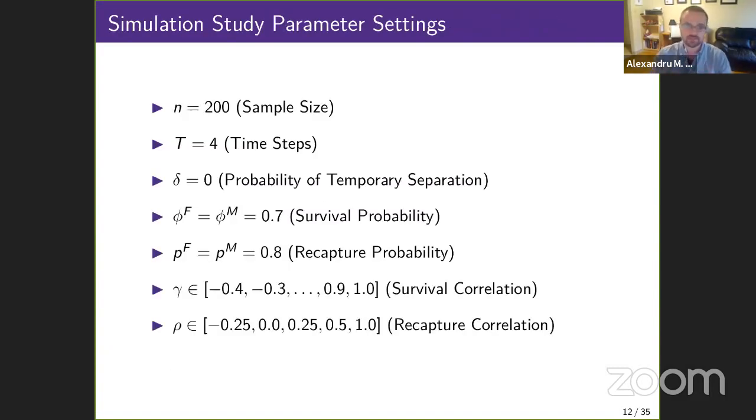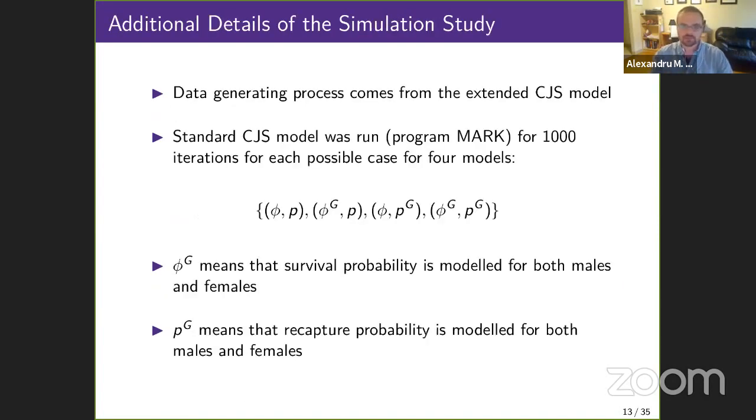Here are some details of the simulation study. I generated datasets under the extended CJS model for a sample of 200 animals across four time steps with equal survival and recapture probabilities for both males and females across various levels of correlation. I fixed the number of pairs in the model to be essentially the majority of the population, so as many animals are paired up as they could be. And we denote the amount of survival correlation between a given mated pair with the symbol gamma and the recapture correlation between a mated pair with the symbol rho.